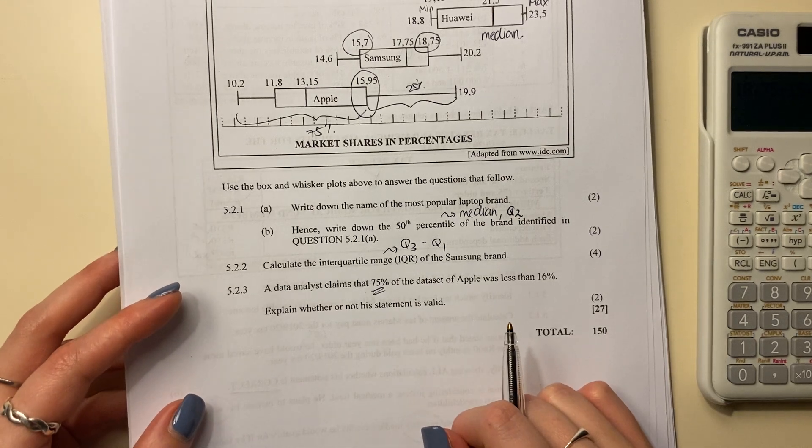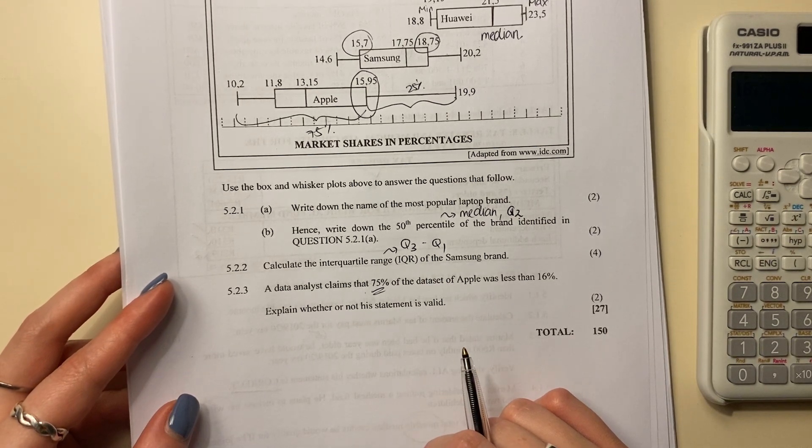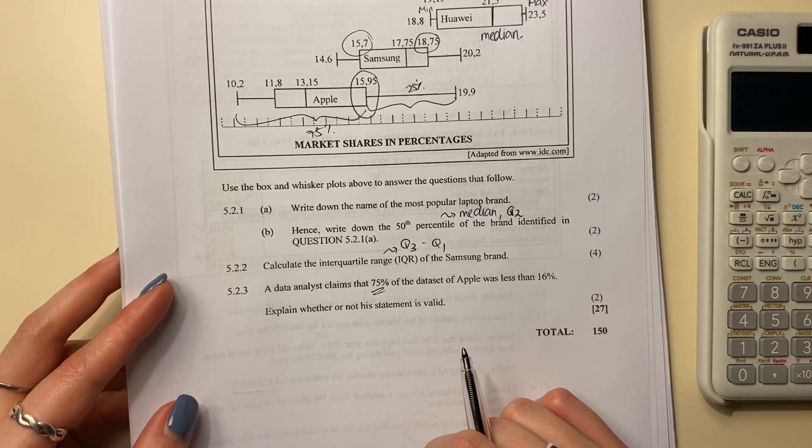So Q3 equals 15.95%, which is the 75th percentile. Therefore, you have to say it's true because it specifically says explain whether or not your statement is valid. Therefore, you say it's true or it's valid, and then you get your two marks. And you have done spectacularly. Well done on finishing the paper.